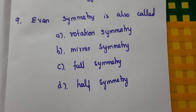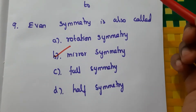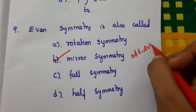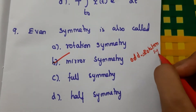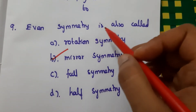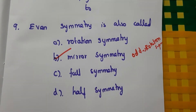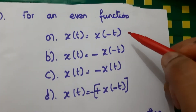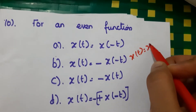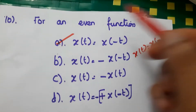Ninth question: even symmetry is also called mirror symmetry, so the answer is B. Odd symmetry is known as rotational symmetry. Tenth question: for an even function, x(t) = x(−t), so the answer is A.